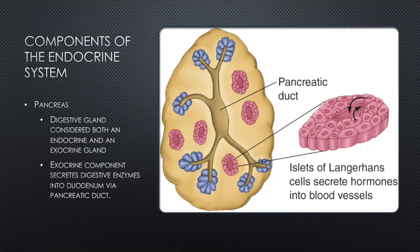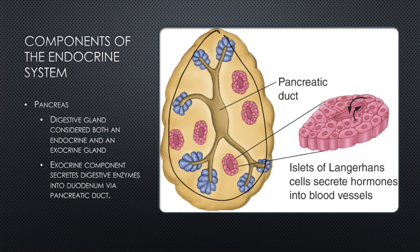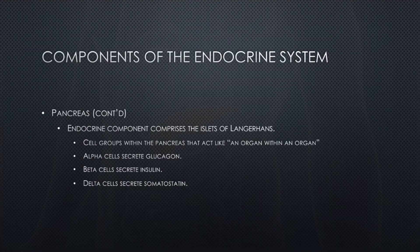One of the major endocrine organs is the pancreas, which is a digestive gland. It's considered both endocrine and exocrine — the exocrine component secretes digestive enzymes into the duodenum via the pancreatic duct. Looking at a transection of the pancreas, you can see the pancreatic duct on the inside and the islets of Langerhans, where hormones like insulin come from. These pancreatic enzymes also help with digestion.